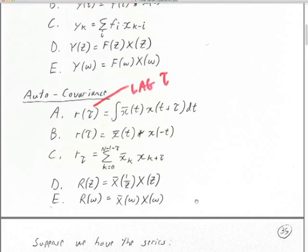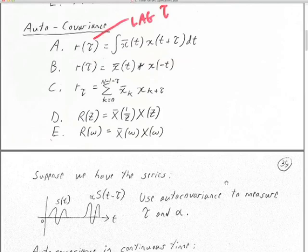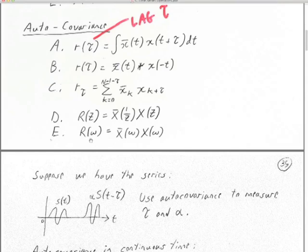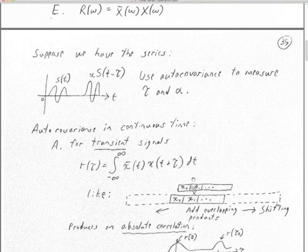Why do we use autocovariance? It's connected to the statistics of normal equations and fitting data. The R you calculate when you fit a line to data points is really R at lag zero seconds. Here I'm telling you that you can get a whole R at any frequency or any lag you like — it's kind of an extension of that concept.